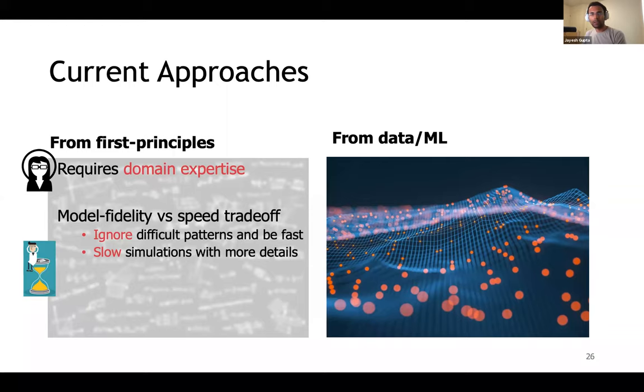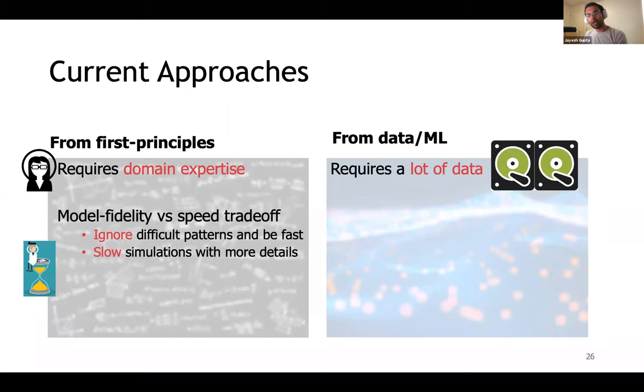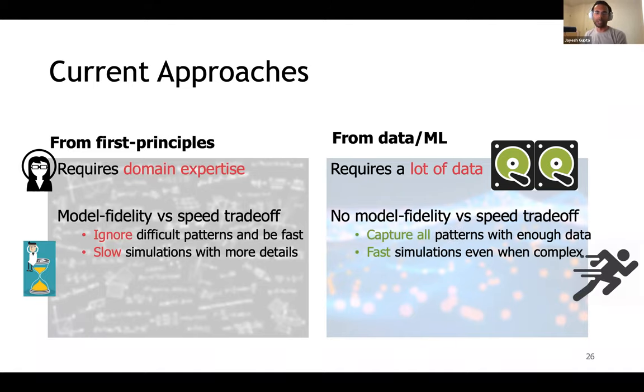The other perspective from AI or machine learning is to learn directly from data. However, models using large function approximators like deep neural networks require large amounts of data to work, which can often be difficult for real world systems. But what's great about them is that they do not suffer that much from the trade-off between model fidelity and speed. Not only are they capable of modeling all the patterns in the data, you could say universal approximation capabilities, but given the amount of engineering resources being spent on making their routines fast, such models are often much faster to simulate.